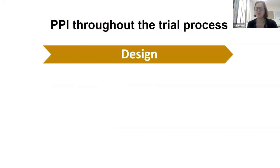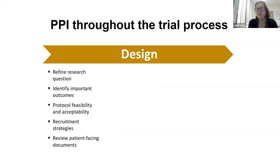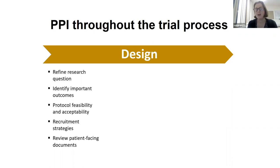Thinking about PPI throughout a trial process: right at the beginning, at the design stage, involving patients means you can refine the research question. Think about what matters — what outcomes are you going to measure? Sometimes measuring the easiest outcome may not be the most clinically relevant outcome to patients. Think about the protocol — is it feasible and acceptable what you're going to be asking participants to do? The frequency of visits, the number of blood tests? Patients can be hugely helpful with recruitment strategies, using their networks and thinking about ways of reaching out to all people in their disease community. And they can certainly review patient-facing documentation, making sure it really gets the right message across in an accessible way.